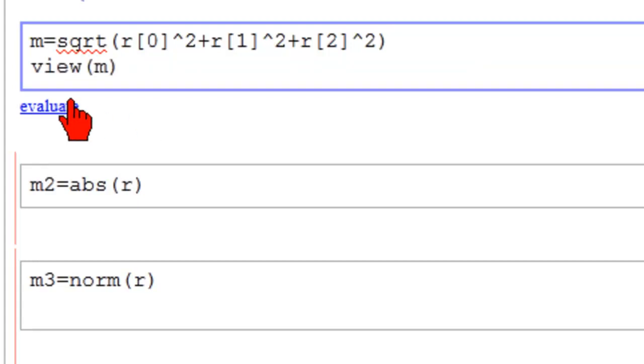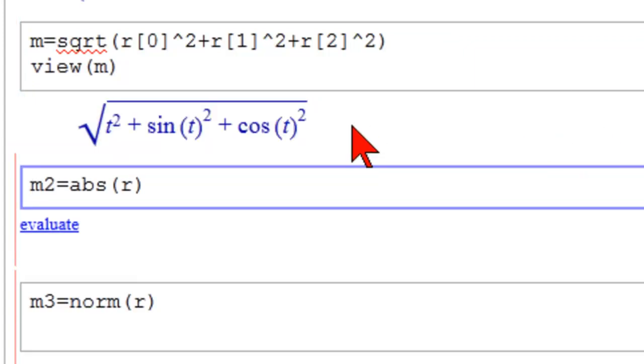And evaluate. And there it is. There's the first component squared, plus the second component squared, plus the third component squared.